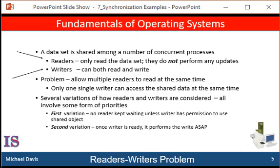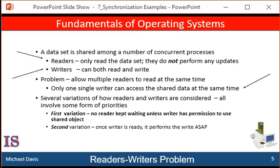To ensure that these problems do not occur, the writers must have exclusive access to the shared database while writing. This synchronization problem is referred to as the reader's writer's problem. The reader's writer's problem has several variations, all involving priorities. The simplest one, referred to as the first reader's writer's problem, requires that no reader be kept waiting unless a writer has already obtained permission to use the shared object. The only way a writer can lock down the object is if there are no readers waiting for that object.